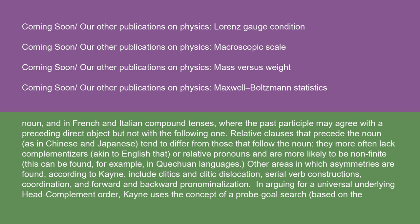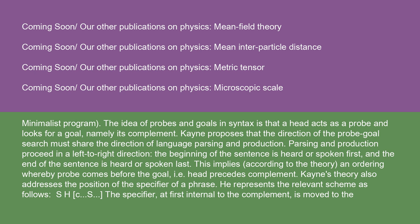Other areas in which asymmetries are found, according to Kayne, include clitics and clitic dislocation, serial verb constructions, coordination, and forward and backward pronominalization. In arguing for a universal underlying head-complement order, Kayne uses the concept of a probe-goal search based on the minimalist program. The idea of probes and goals in syntax is that a head acts as a probe and looks for a goal, namely its complement. Kayne proposes that the direction of the probe-goal search must share the direction of language parsing and production. Parsing and production proceed in a left-to-right direction, implying an ordering whereby probe comes before the goal — i.e. head precedes complement.